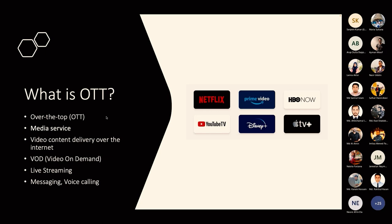What is OTT? OTT stands for Over The Top. It means it works without any cable, satellite, or anything else — it works over the internet. It is basically a media service that delivers video content over the internet. There are a few types of OTT: VOD (Video on Demand), live streaming, and some other sub-features like messaging and voice calling. Most commonly we refer to VOD and live streaming.